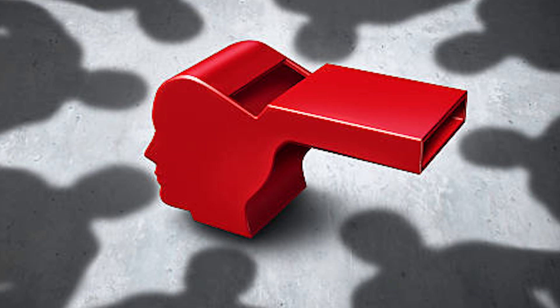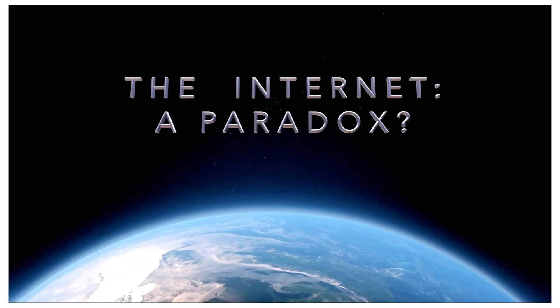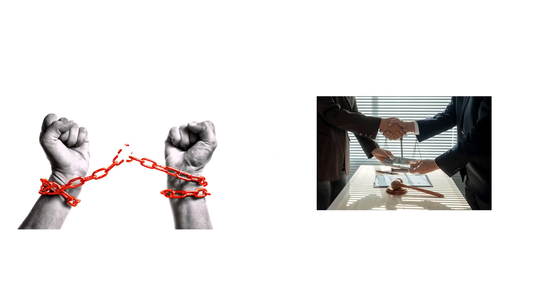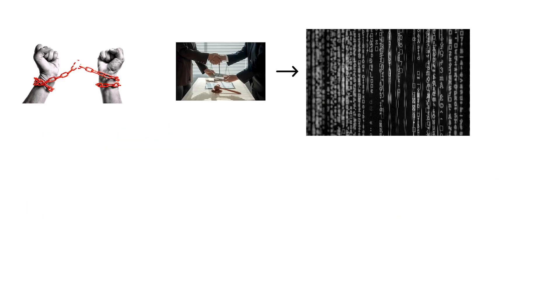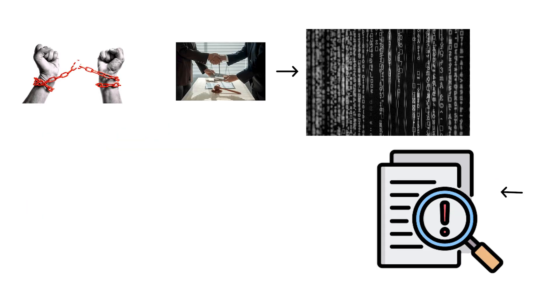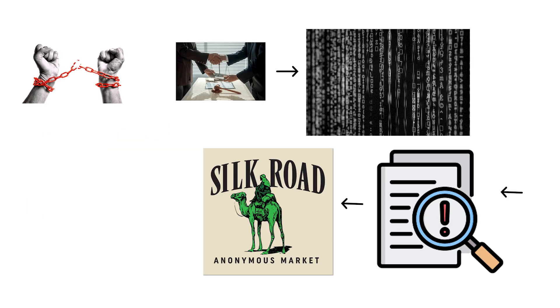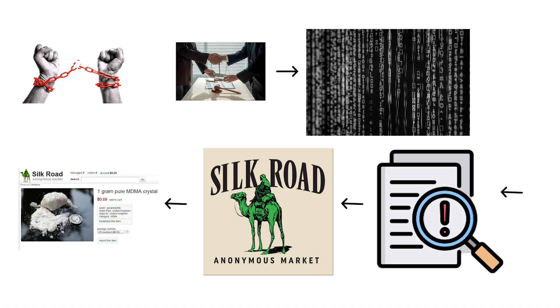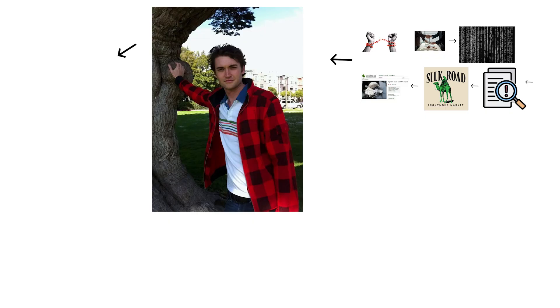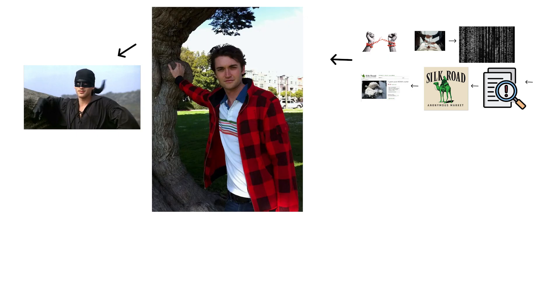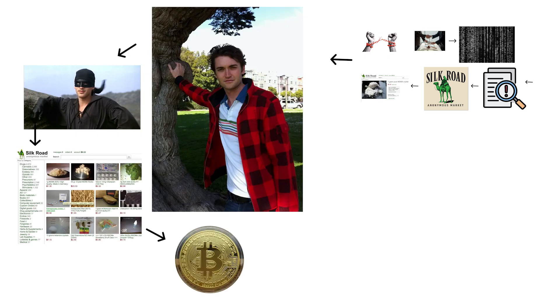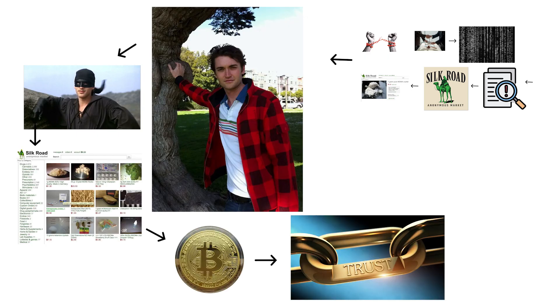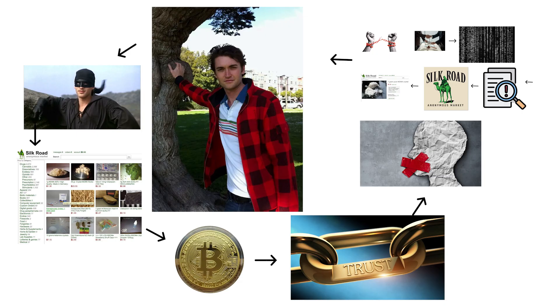Journalists use it to protect sources under oppressive regimes. Activists use it to speak without being tracked. Whistleblowers use it to leak evidence without being silenced. It's the internet's paradox — a place where freedom and corruption coexist in the same encrypted breath. The first major proof of this layer's existence came with Silk Road, the legendary marketplace run by Ross Ulbricht, a.k.a. Dread Pirate Roberts. It was an online bazaar where Bitcoin was currency, trust was reputation, and anonymity was law.